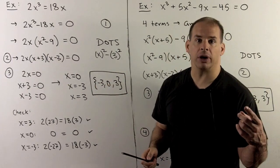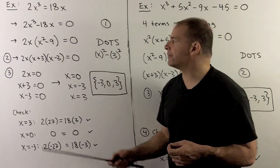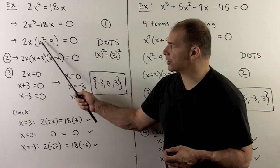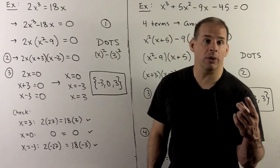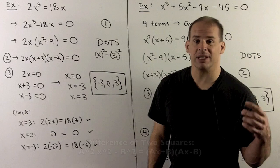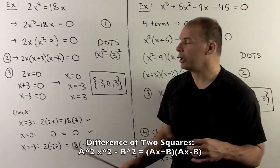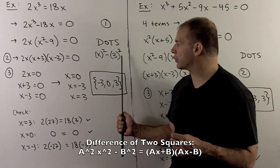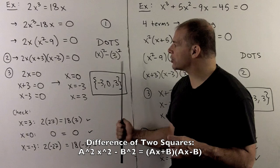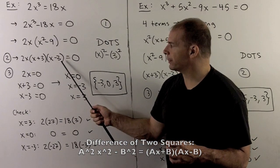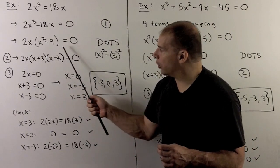We try to factor. There's a greatest common factor here of 2x, so we pull that out. That leaves an x squared minus 9. We note, that's one of our special cases. This is a difference of two squares. So I can write that as x squared minus 3 squared. And then that factors as x plus 3, x minus 3. So we factored our polynomial.